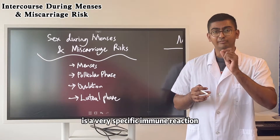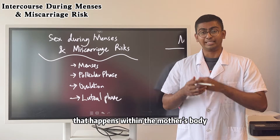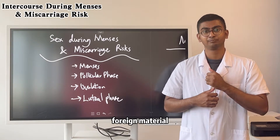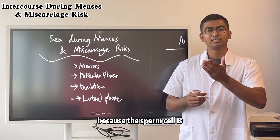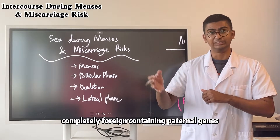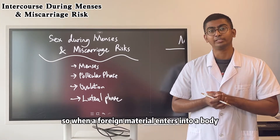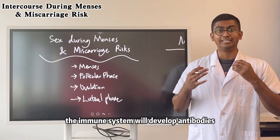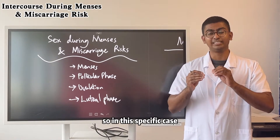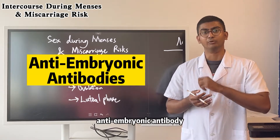This is a very specific immune reaction that happens within the mother's body when it recognises this foreign material, because the sperm cell is completely foreign paternal genes. So when a foreign material enters into a body, the immune system will develop antibodies. In this specific case, it will develop an antibody known as anti-embryonic antibody.